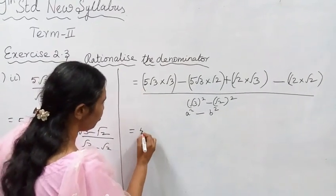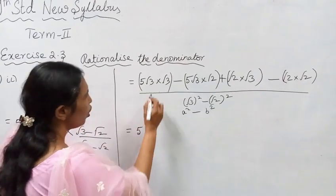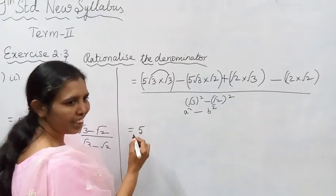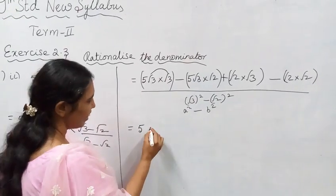Here, 5 times √3 into √3 equals 5 into 3, which gives 15. Same numbers under the root multiply to give the number itself.